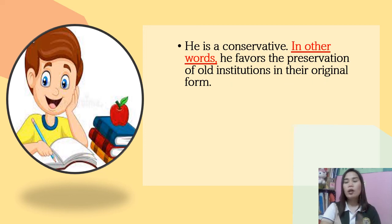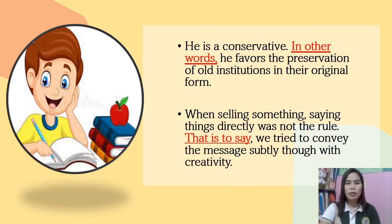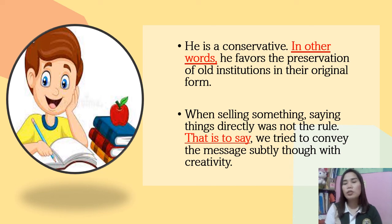Reformulation sentence examples: 'He is a conservative — in other words, he favors the preservation of old institutions in their original form.' Next: 'When selling something, saying things directly was not the rule — that is to say, we tried to convey the message subtly, though with creativity.' 'That is to say' is an example of a transition showing reformulation.